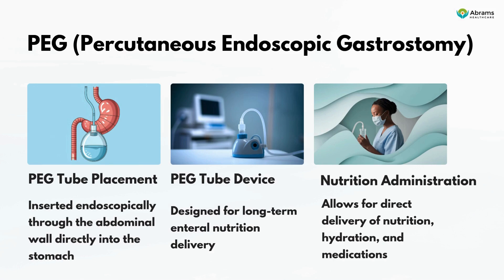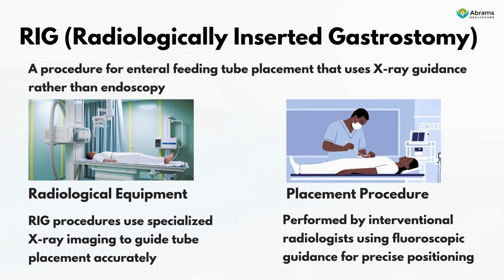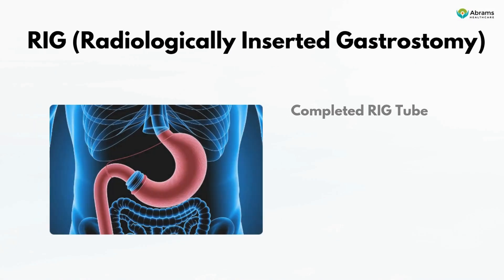The PEG tube is inserted endoscopically through the abdominal wall directly into the stomach and is designed for long-term enteral nutrition delivery, allowing direct administration of nutrition, hydration, and medications. RIG — radiologically inserted gastrostomy — uses x-ray guidance rather than endoscopy, with placement performed by interventional radiologists using fluoroscopic guidance for precise positioning, providing a reliable alternative when endoscopic PEG placement isn't feasible due to anatomical considerations.